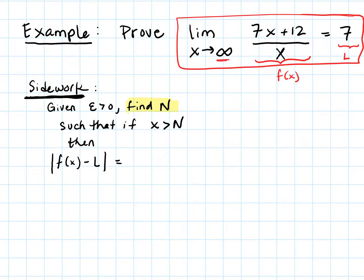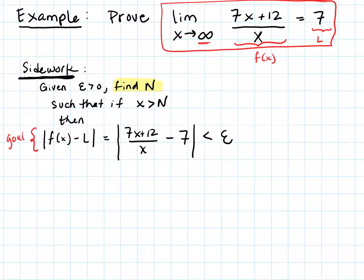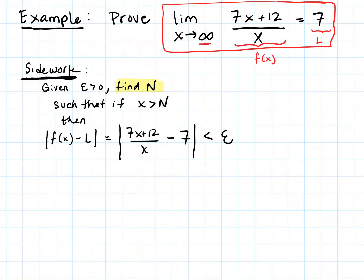So |f(x) - L| is |(7x + 12)/x - 7|, and we want that to be less than any given epsilon. Again, this is not a proof — this is side work. In the proof, this expression is the goal. We're starting with what we want in the proof and using it to find N.